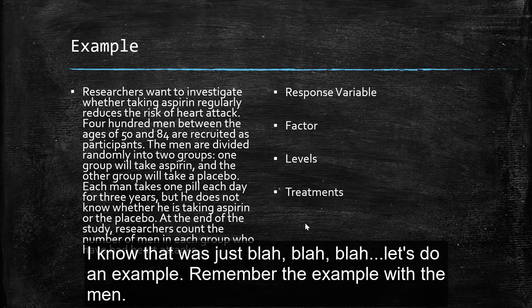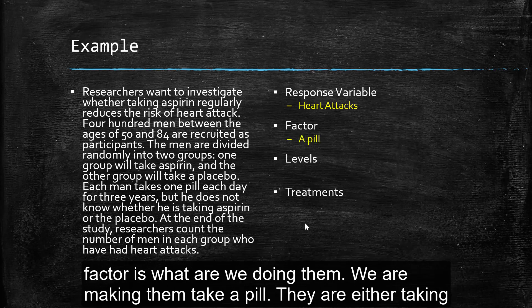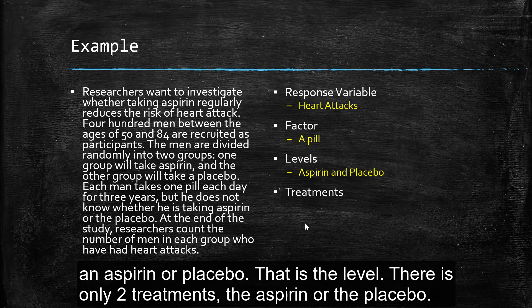For our example of the men, the response variable is what's happening? What are we measuring at the end of the experiment? What are we looking at? And that's if they've had a heart attack. Now, the factor is what are we doing to them? We're making them take a pill. Now, there's either they're taking the aspirin or the placebo, and that's the level. So there's only two treatments, the aspirin or the placebo.